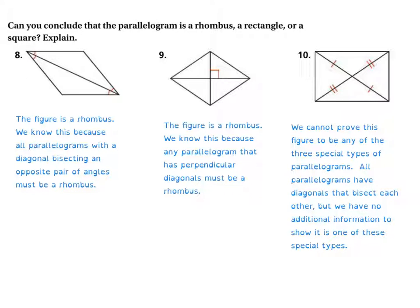Again, you're taking what you know about features of rhombuses, rectangles, or squares and saying, if it displays this feature, then it's one of these things. For number 8, if a pair of opposite angles are bisected by the diagonal, then it must be a rhombus. If the two diagonals form 90-degree angles, it must be a rhombus. But all parallelograms have diagonals bisected, so that doesn't narrow it down to be a rhombus, rectangle, or square.